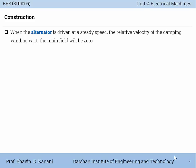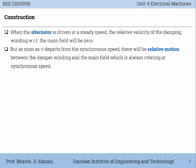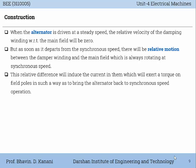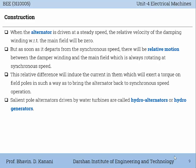When the alternator is driven at a steady speed, the relative velocity of the damper winding with respect to the main field will be zero. But as soon as it departs from synchronous speed, there will be relative motion between the damper winding and the main field, which is always rotating at synchronous speed. This relative difference will induce current in the damper winding, which will exert a torque on the field poles in such a way as to bring the alternator back to synchronous speed operation. Salient pole alternators driven by water turbines are called hydro alternators or hydro generators.